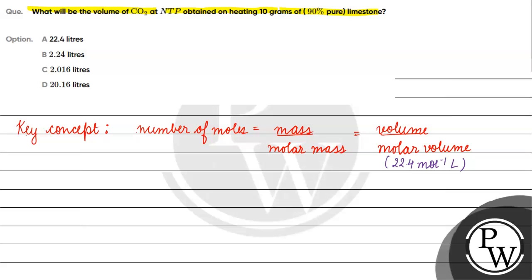Now, if we talk about this question, we have calcium carbonate that we heat. Calcium carbonate means CaCO₃. On heating, it becomes calcium oxide and carbon dioxide. Looking at this reaction and its stoichiometry, we can say that one mole of calcium carbonate gives one mole of carbon dioxide.